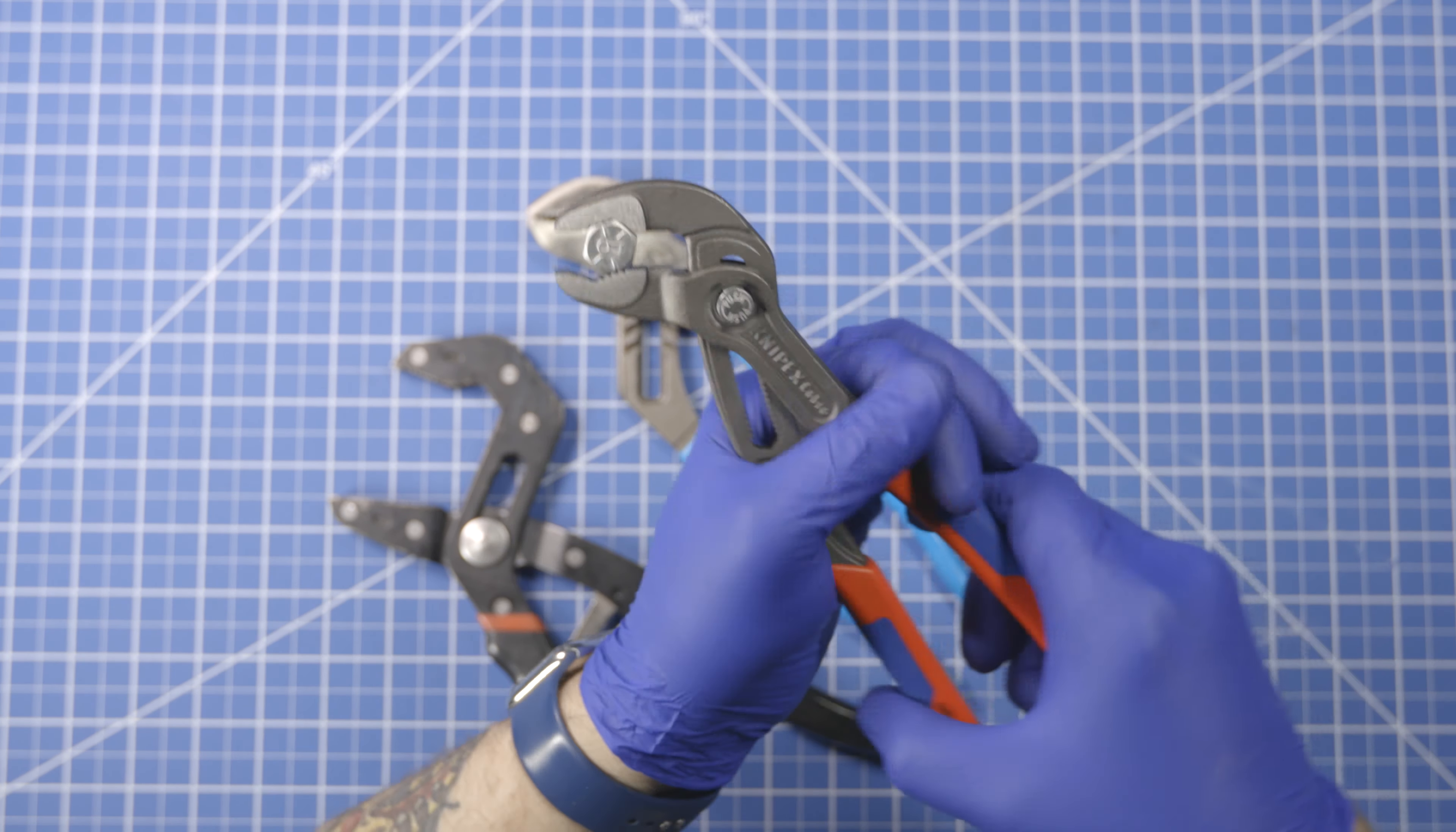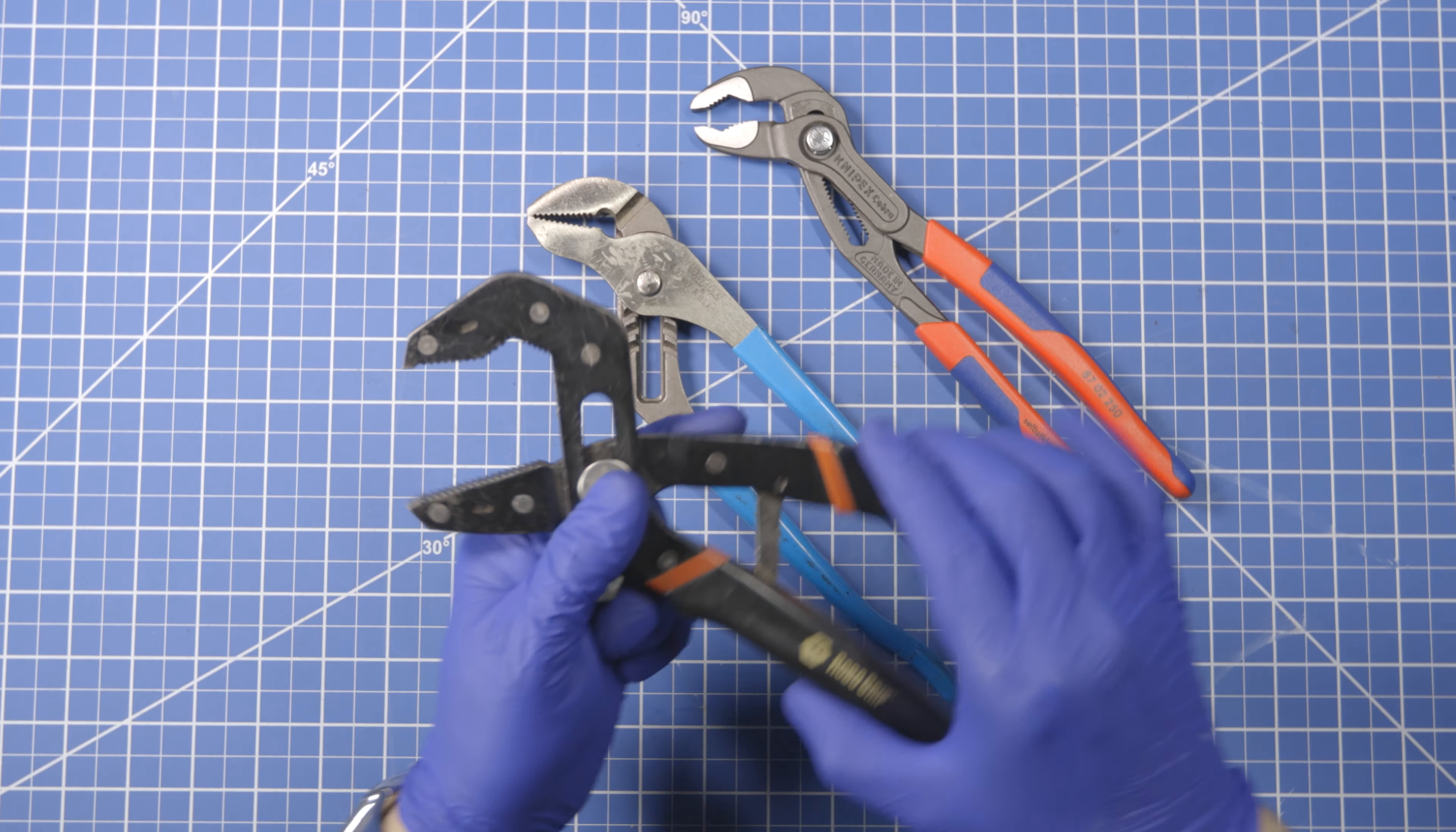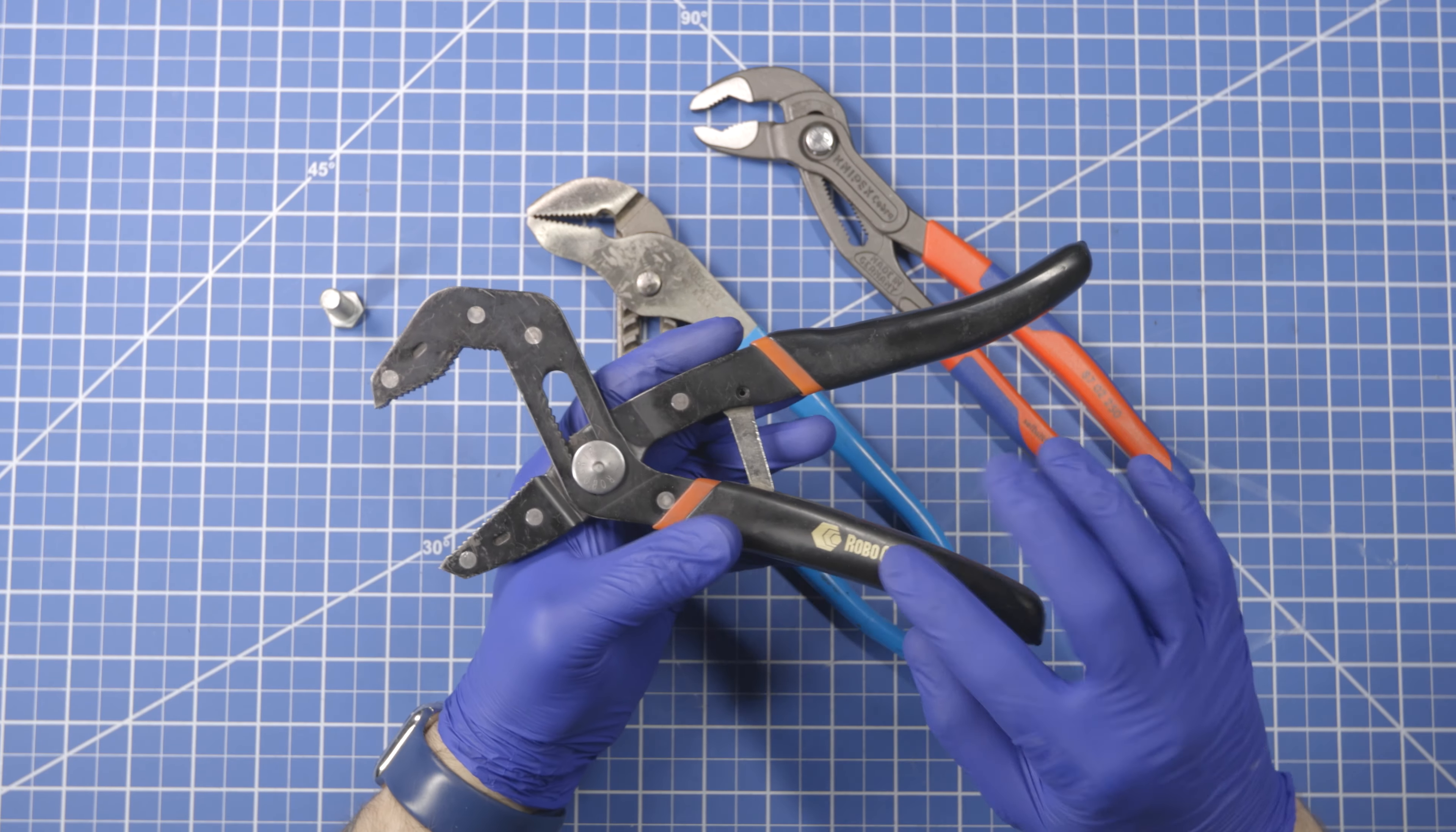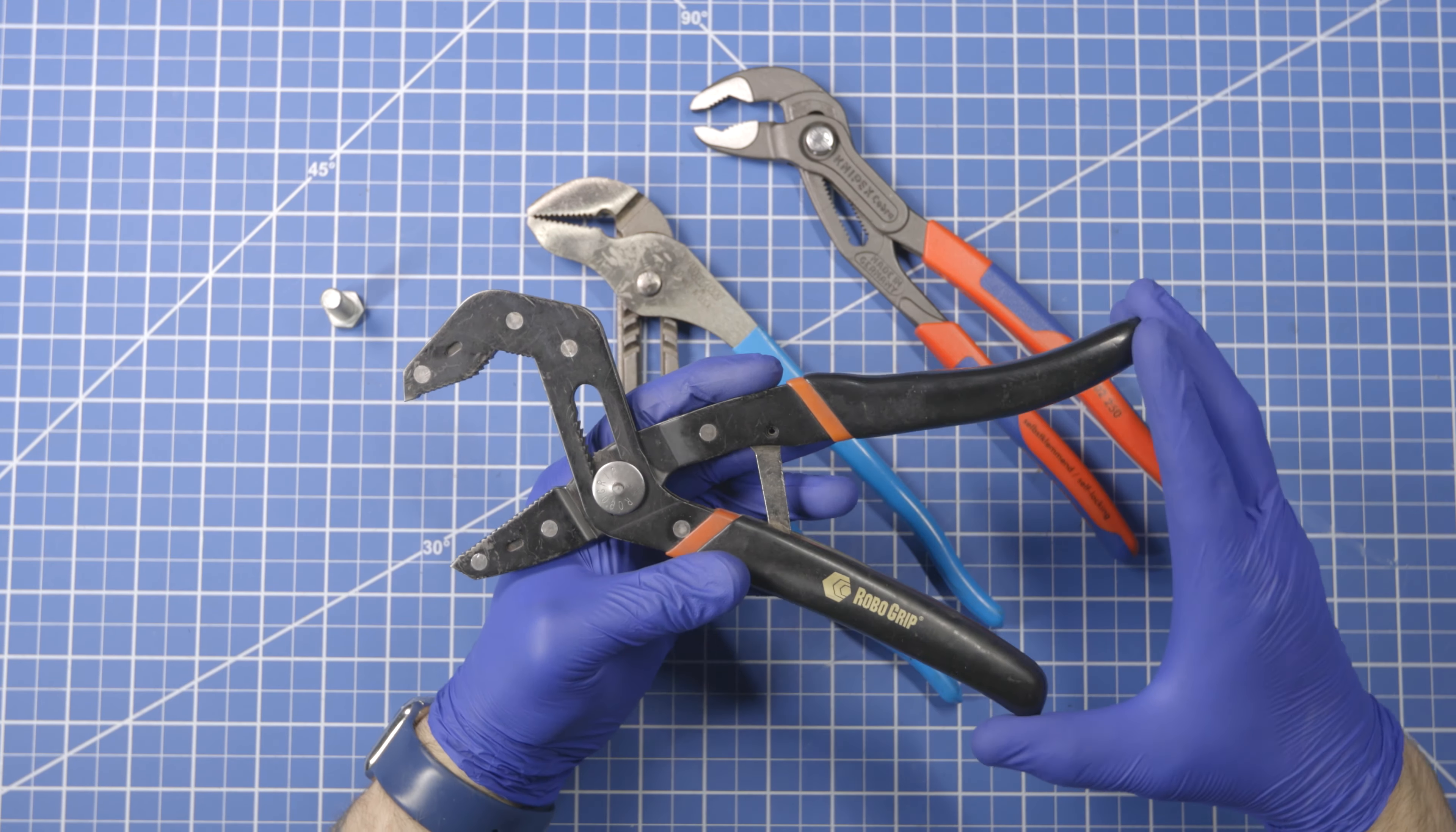So yeah, that's how these work. And then lastly we have these robo grips, which I think these are before they were owned by Craftsman. Now it's a Craftsman tool. These are pretty old and the way these work is it's this kind of double pivoted mechanism here.